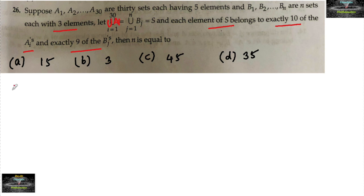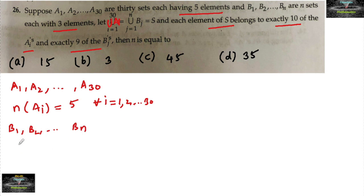So here it is given some 30 sets are there: a1, a2, and so on a30, each having 5 elements. That is, the number of elements in each set is equal to 5 for all i equals 1 to 30. And b1, b2, and so on bn are n sets, with the number of elements in each bj equal to 3 for all j equals 1 to n.